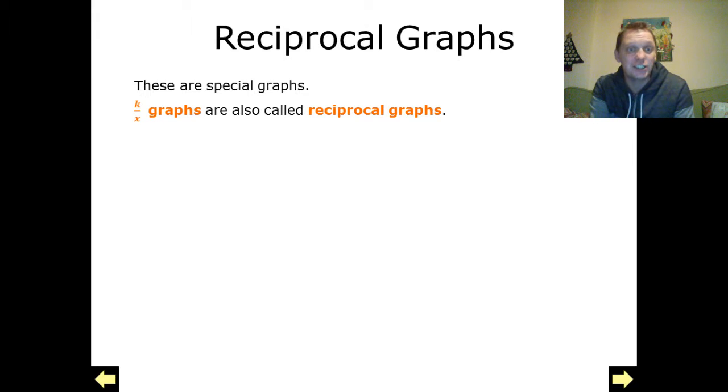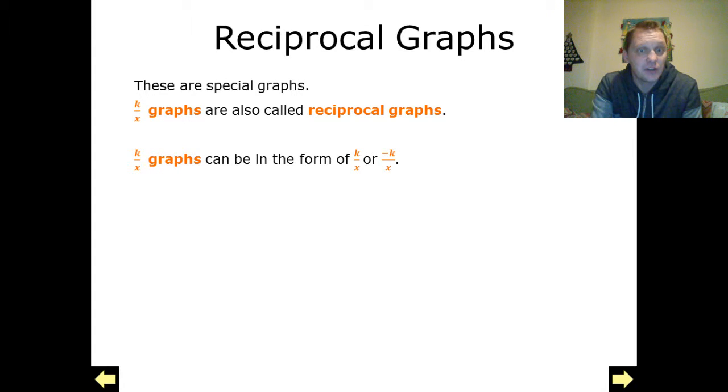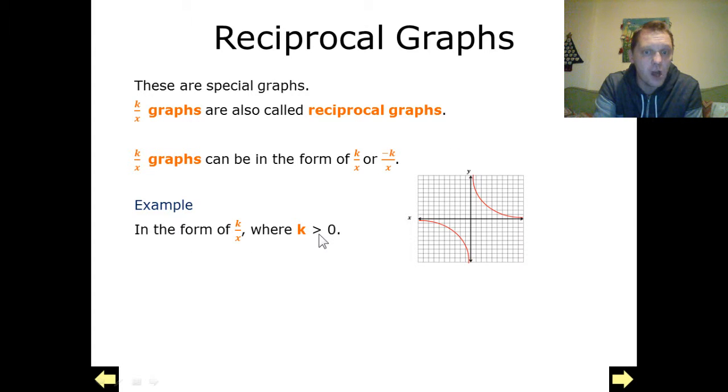Now the x is the variable that we change each time that we put an input in to try and calculate what y is going to be. So these graphs can be in the form of a positive number or a negative number as our numerator. When we've got a positive number, so a number larger than zero, we end up with curves in our first quadrant and in our third quadrant.